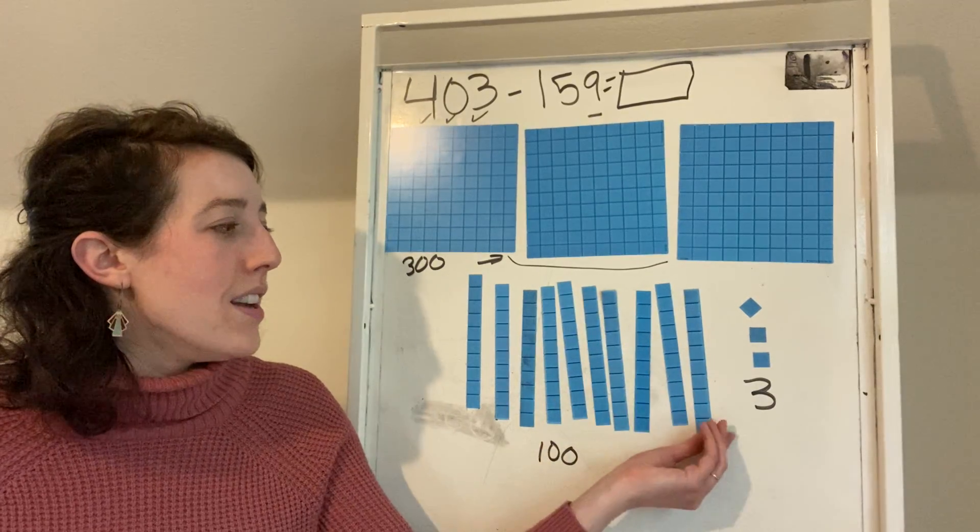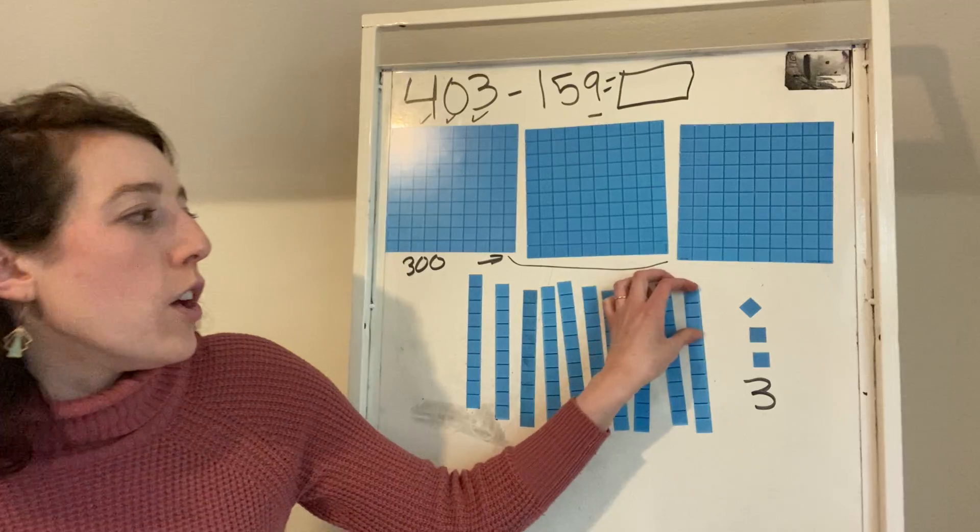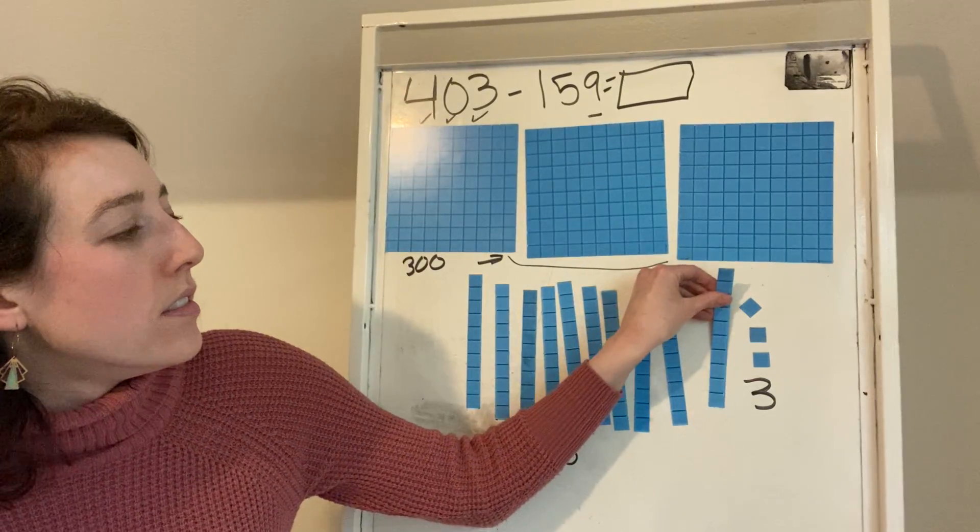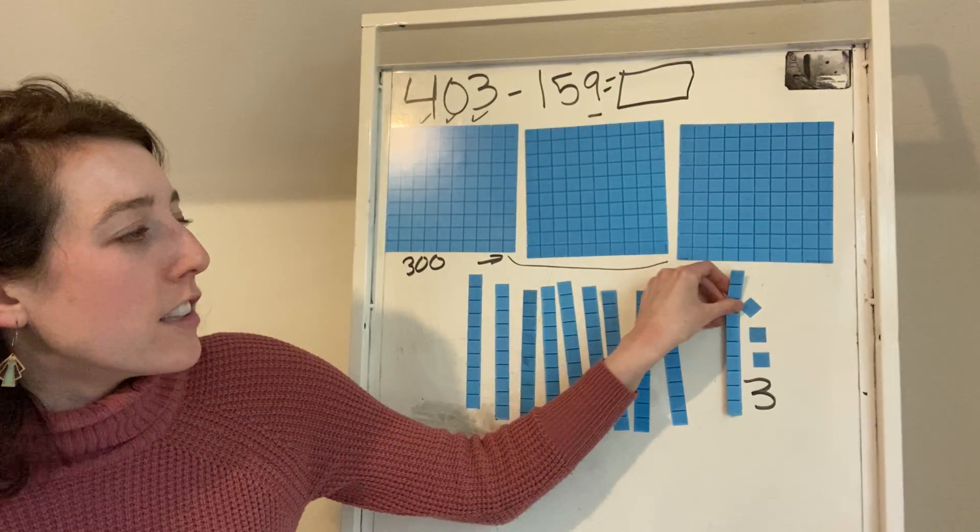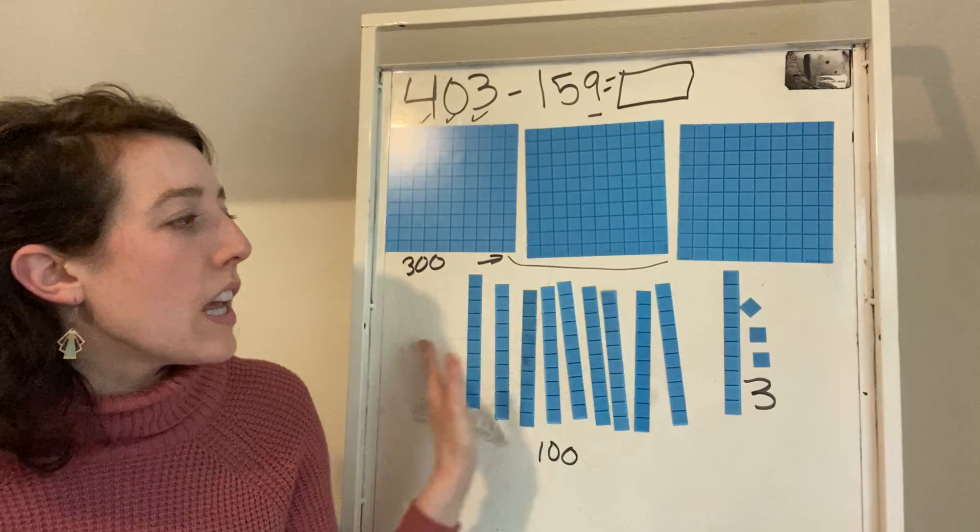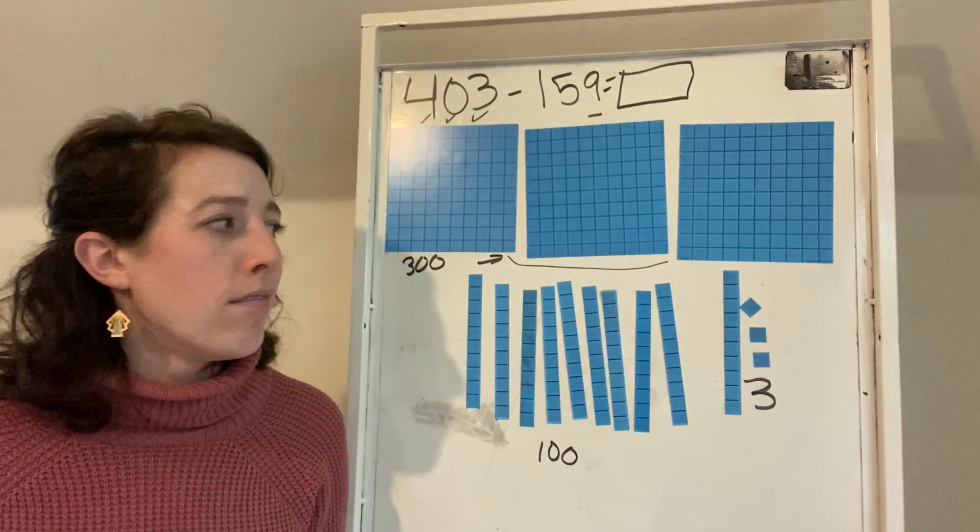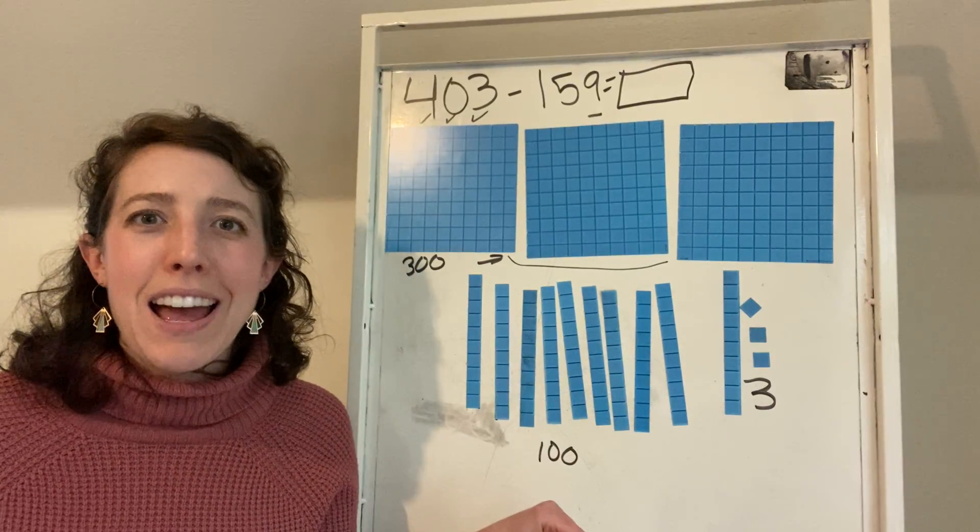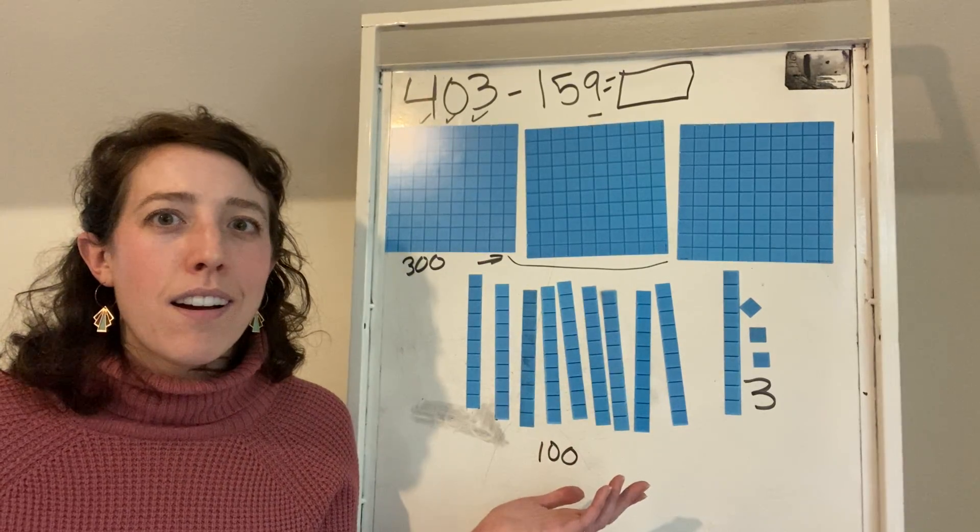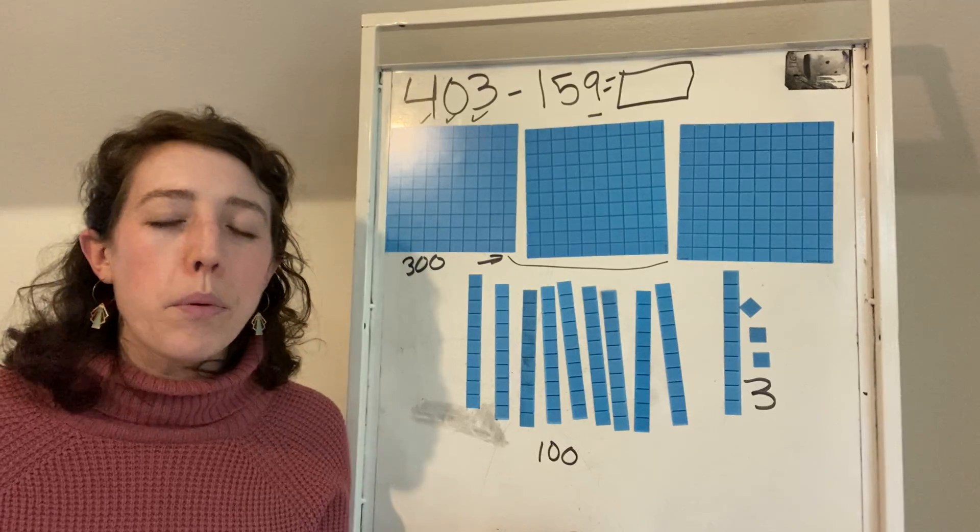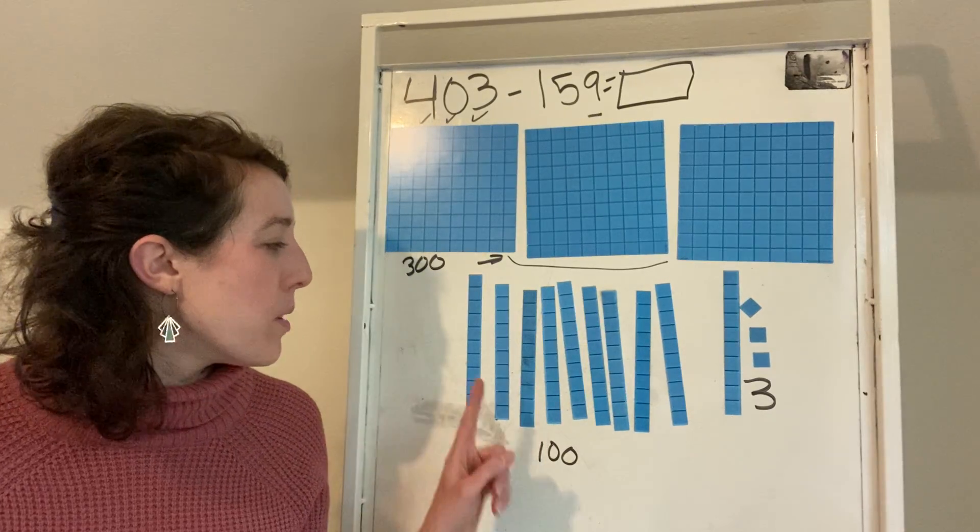So look, I'm going to take this 10 and move it over here to my ones. So look, if I take my 10 and move it over here. How many tens do I have now? Nine tens. But we can count just to be sure. Count with me.